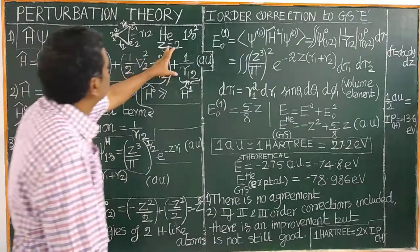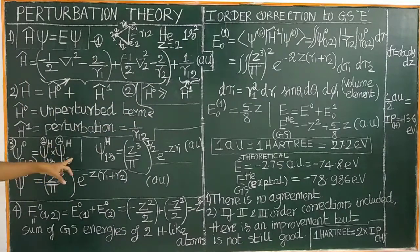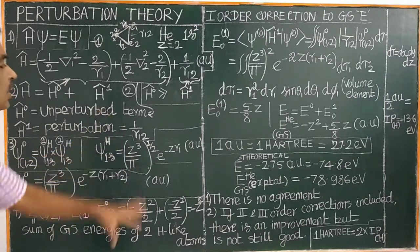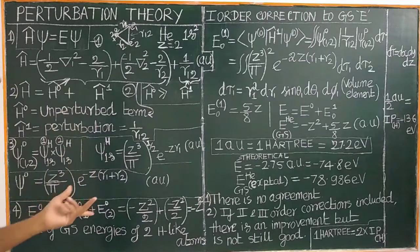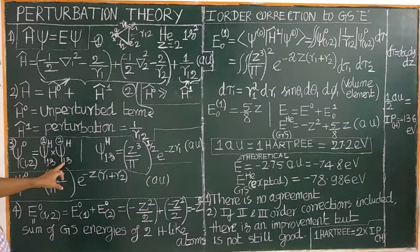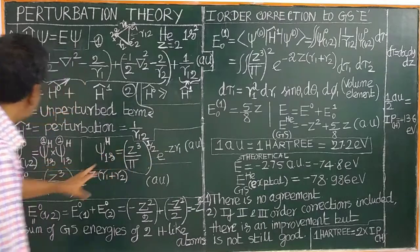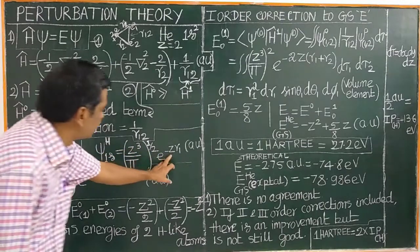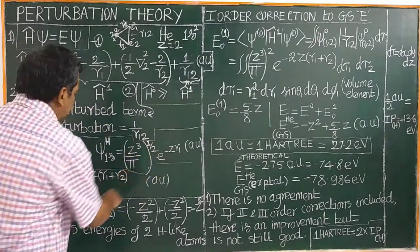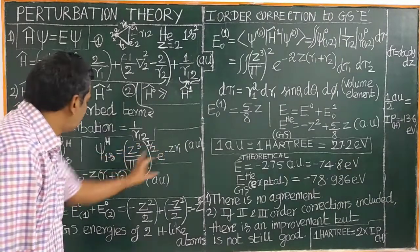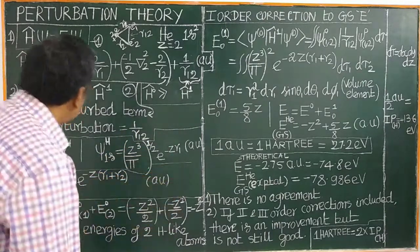For helium atom, there are two electrons. Therefore, the wave function is the product of two wave functions of hydrogen-like atoms. Psi for one electron is the hydrogen-like atom wave function, and similarly for the second electron. We substitute it: one electron has Zr₁ and the other Zr₂. The wave function for helium atom is (Z³/π) e^(−Z(R₁ + R₂)), with both electrons R₁ and R₂ in atomic units.